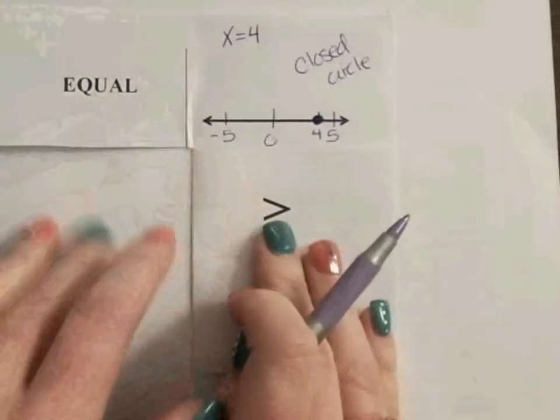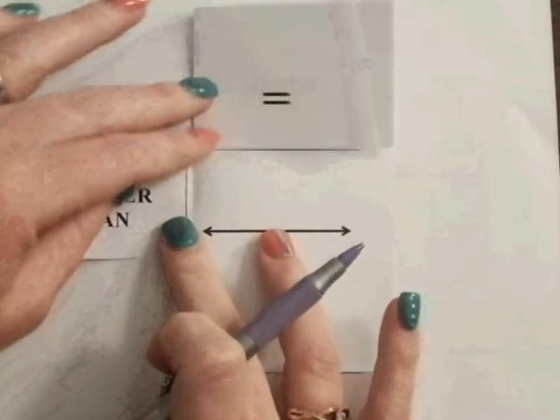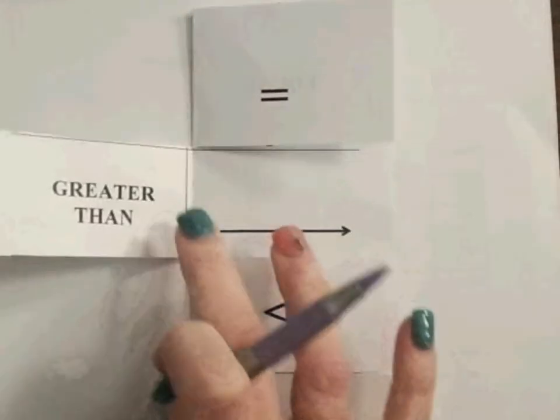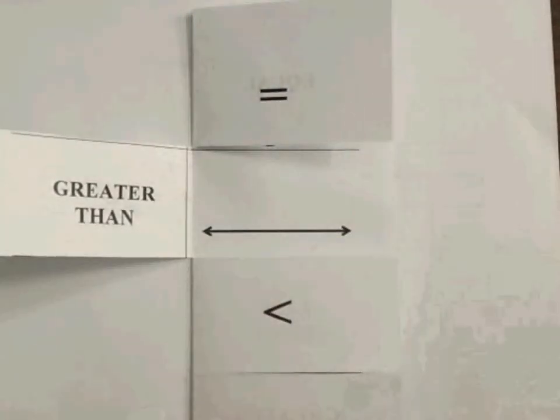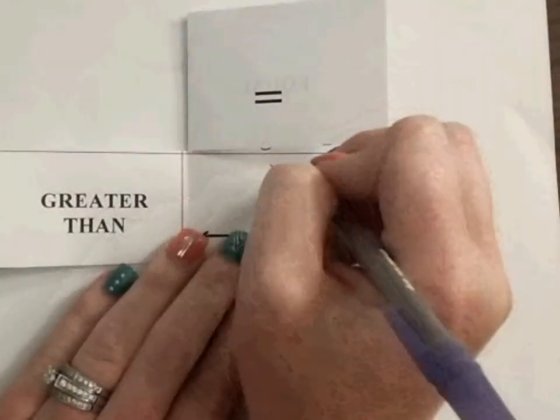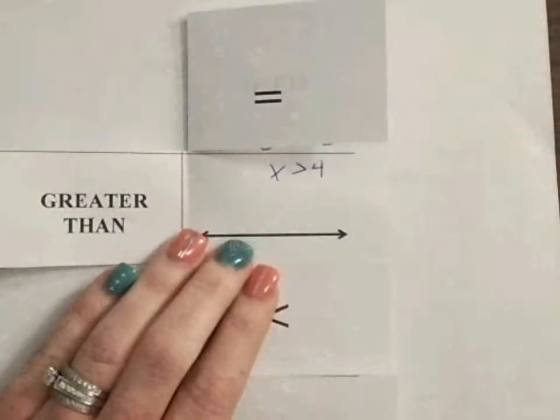Let's go to the next one. This one is greater than. Now remember, it's important to remember that we know which sign it is depending on which way it's facing and how it is with our variable. So on this one, if I have x is greater than 4, that means that my inequality sign is opening up to my x.